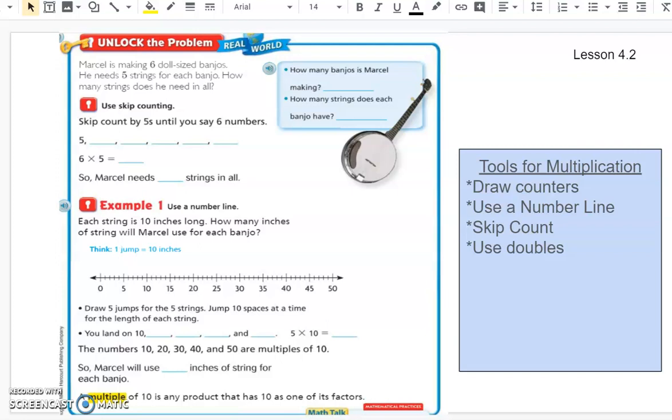Today we're moving on to lesson 4.2. We're going to be multiplying by 5 and 10 today. So before we get started, I'm already thinking about what I know about 5 and 10. I can easily skip count by 5s: 5, 10, 15, 20, and so on.